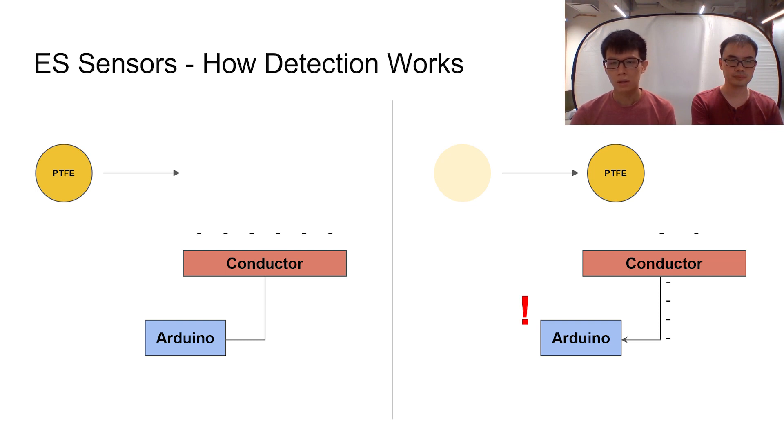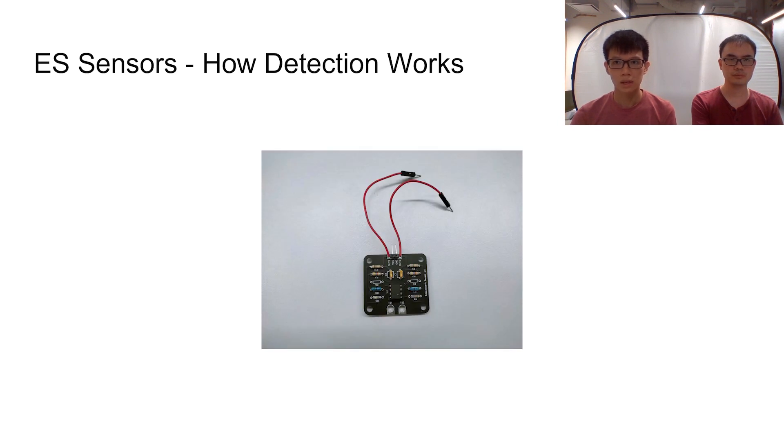In our local climate, the small induced current is sometimes too miniscule to detect. This is mainly due to our high relative humidity, which reduces electrostatic interactions between all objects. So to help amplify the input current received by the Arduino, we had to place this PCB between the ES sensor and the microcontroller. Though, in many climates that aren't as wet as Singapore, this component will not be necessary.